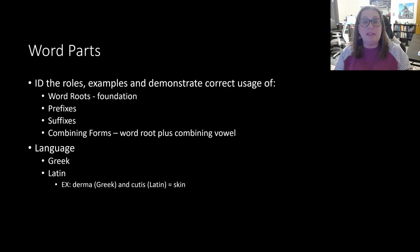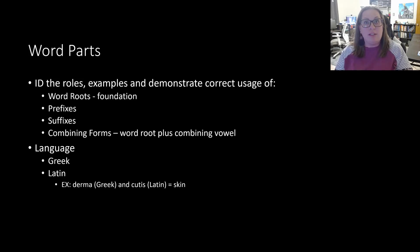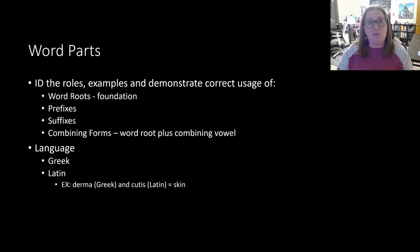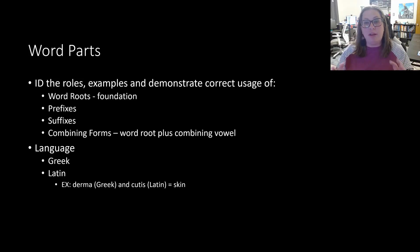Another example: 'bi' is the Latin prefix for two, and 'cycle' means wheels, so a bicycle is something with two wheels. On the other hand, 'di' is the Greek prefix for two, so dioxide means I have two molecules of oxygen. That's how we can look at building these words.